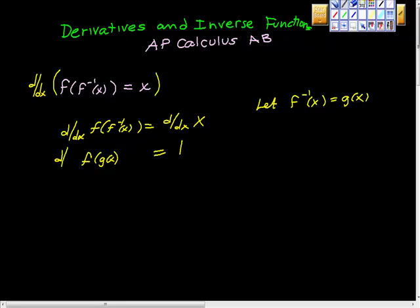And we want its derivative. And of course the derivative of this, if you look at it, it's just the chain rule here, isn't it? So what we get is, we get f prime, we get f prime at g of x times g prime at x is equal to 1.